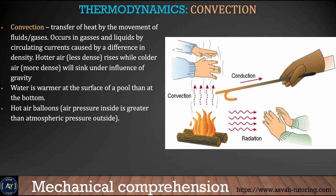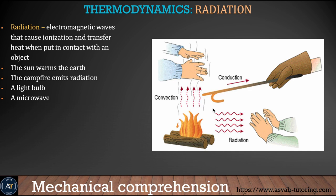Radiation is the electromagnetic wave that ionizes and transfers heat when in contact with an object. We receive heat and light from the sun because of the radiation process. Other examples of radiation include campfires, light bulbs, and microwaves.